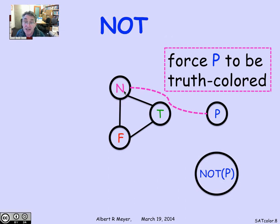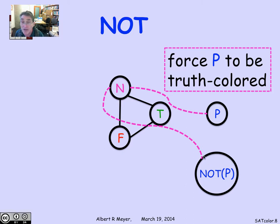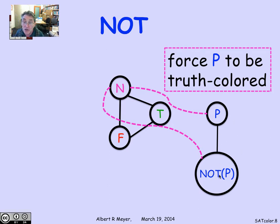Let me explain how to build an inverter. If I have some vertex P that's forced to be truth-valued, and I want some other vertex colored with NOT P — a truth value different from P — then I first force the NOT P vertex to be truth-valued by attaching it to the neutral color via a magenta edge. That means the only way to three-color the whole graph is to assign NOT P a color that's either F or T. Then I just put an edge between P and NOT P, and that forces NOT P to have whatever the other truth value was: if P was true, NOT P would have to be false; if P was false, NOT P would have to be true. So an inverter is just about the most trivial gadget — to invert P, you attach it to another vertex, and that other vertex becomes NOT P when both are constrained to be truth-valued.